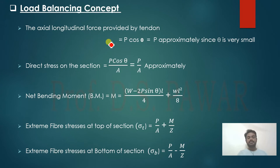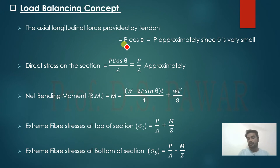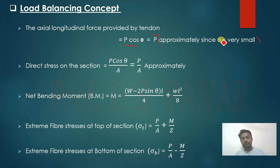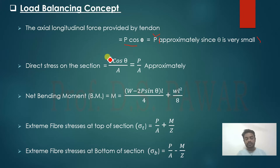In the load balancing concept, the axial longitudinal force provided by the tendon is P cos theta, but we consider it as approximately P since theta is very small. So the direct stress on the section is P/A, since force divided by area equals stress, and P cos theta is approximated as P.